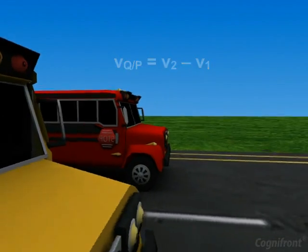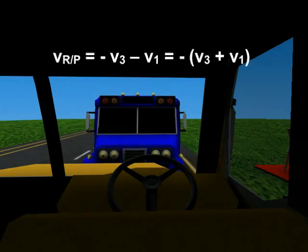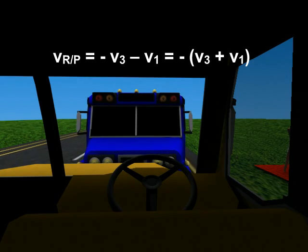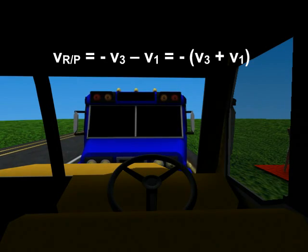Similarly, relative velocity of R with respect to P will be minus V3 minus V1. That is minus of V3 plus V1.